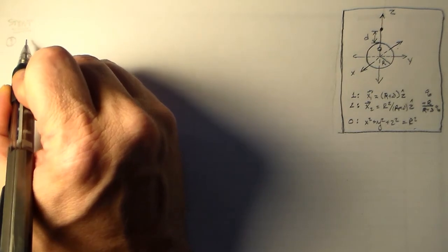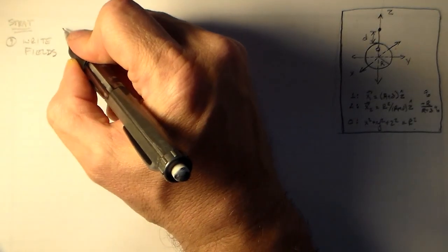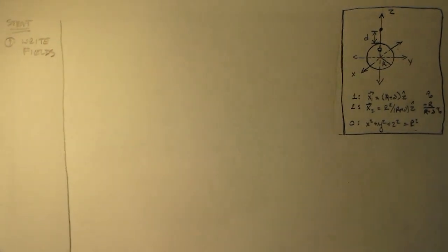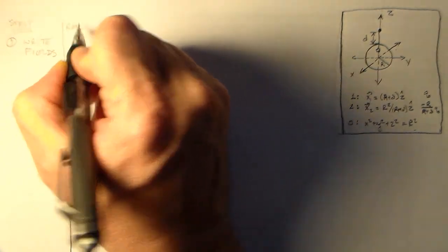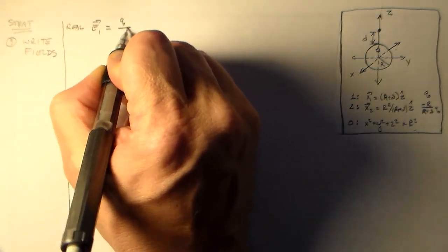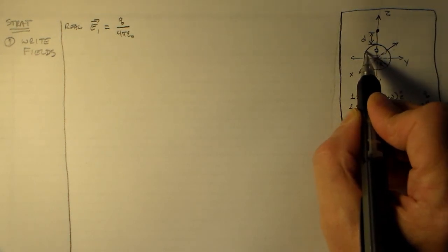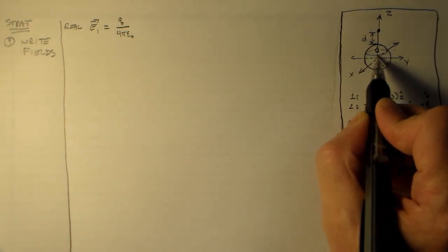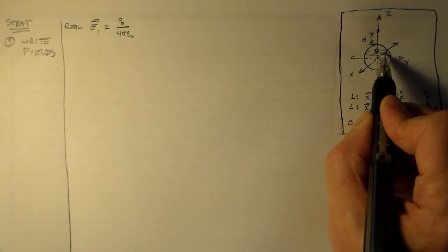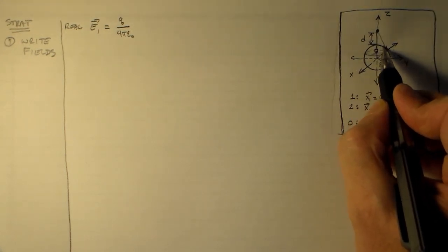First thing, though, is I think we'll just write the fields. In this case we have a situation where we can just use Coulomb's Law. We have two point charges, one real and one imaginary. So we can just go ahead and write the field from the real charge.